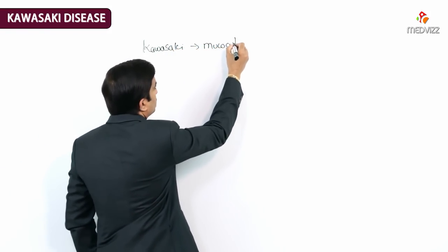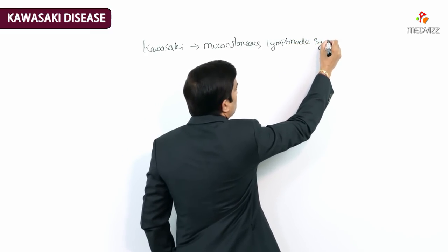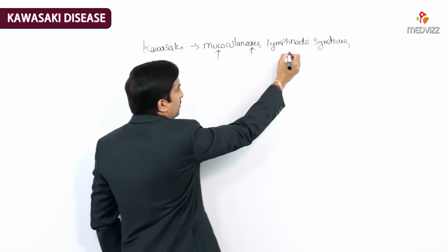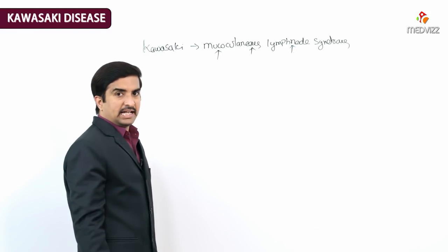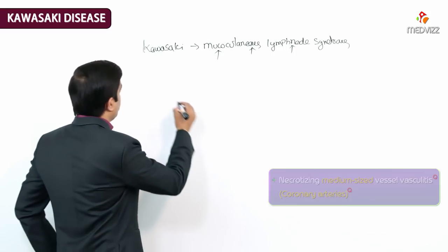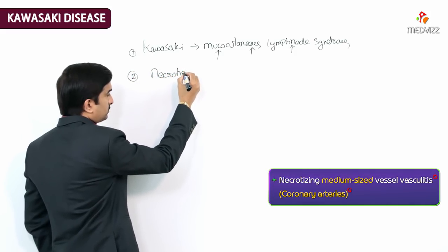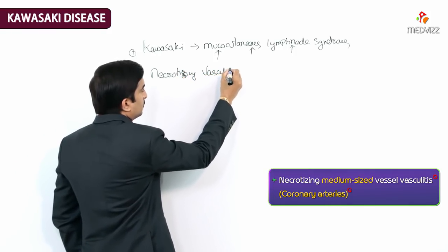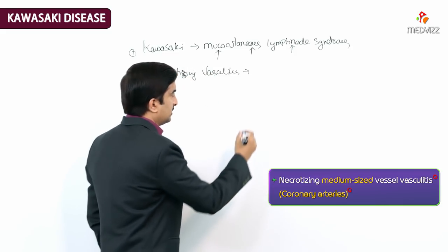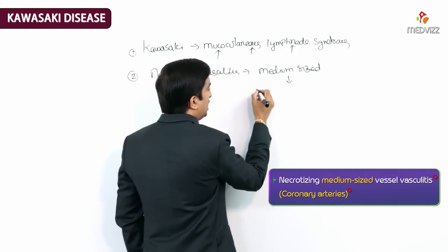Kawasaki disease is called mucocutaneous lymph node syndrome because of the oral mucosal lesions, the involvement of the skin, and the involvement of the cervical lymph nodes — cervical lymphadenopathy. It is a necrotizing vasculitis of medium-sized vessels.